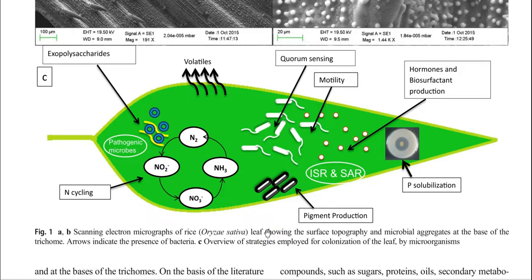The next point is that microbes present on the leaf surface can be involved in nitrogen cycling, or they can fix nitrogen. Those groups of nitrogen-fixing organisms present in the leaf are referred to as diazotrophs — they can use nitrogen and convert it into ammonia. The fixed nitrogen can then be made available for the plant system, which is a beneficial property. Apart from that, they can produce a lot of volatile compounds, which play a lot of role in plant growth promotion.